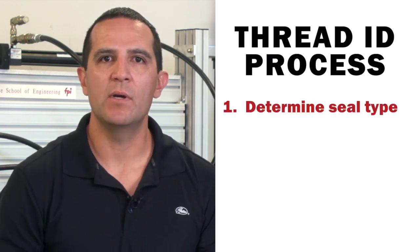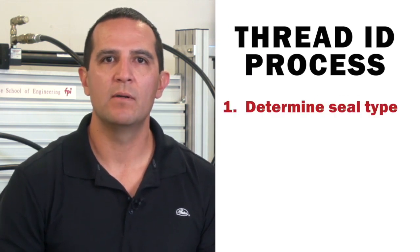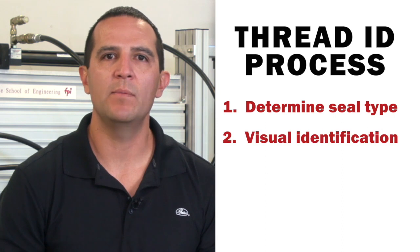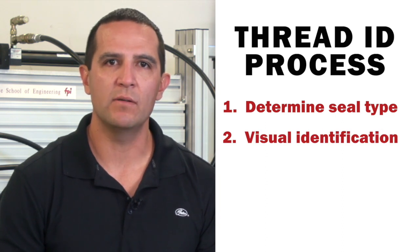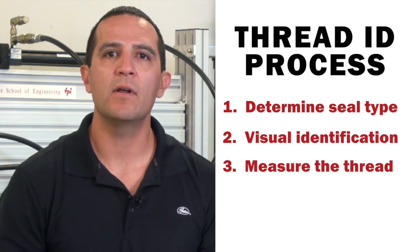First, the seal type must be determined. The second step is to make a visual identification. The third and final step is to measure the thread. In this video, Jason and I will be offering a more in-depth explanation of these steps to help you confidently identify threads and create an assembly.